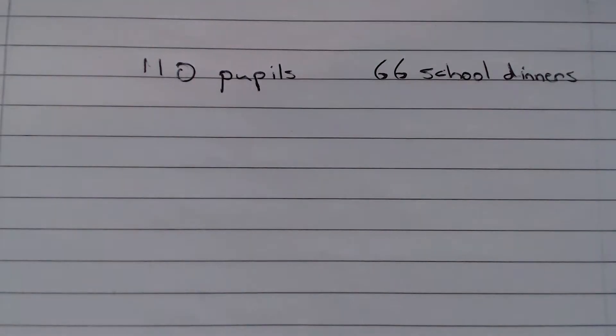So in this question we are told that there are 110 pupils of which 66 have school dinners and the question asks us what is the proportion of students that do not have school dinners and it asks us to give our answer as a decimal.